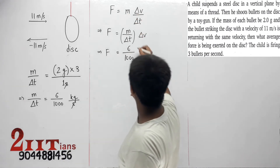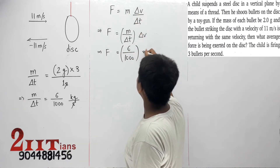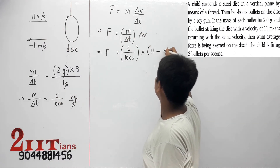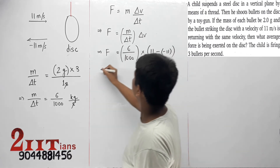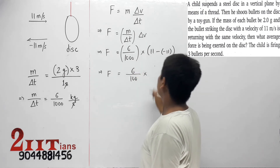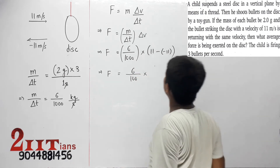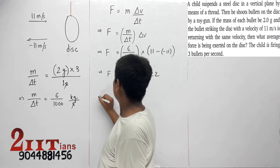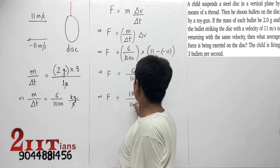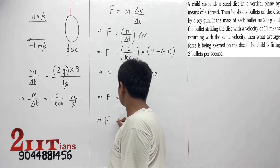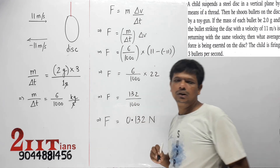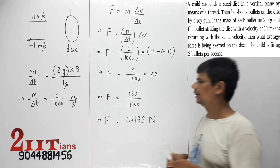Iska delta t, m ko pakad diya. Aur delta v gaya hai — 11 se gayi, minus 11 se wapas hai, toh 11 minus minus 11. F is equal to 6 by 1000 into 11 plus 11, which is 22. That gives us 132 divided by 1000. F is equal to 0.132 Newton. Yahan raha answer hai.